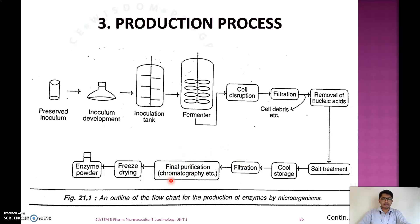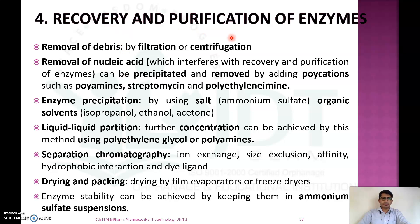Final purification is done by chromatographic method, and enzymes are stored by freeze drying as enzyme powders. In the recovery and purification step, first we remove debris by filtration and centrifugation. Nucleic acids are removed by precipitation using polycations like polyamines, streptomycin, and polyethylamine. Enzyme precipitation is done using salts like ammonium sulfate and organic solvents like isopropanol, ethanol, and acetone.